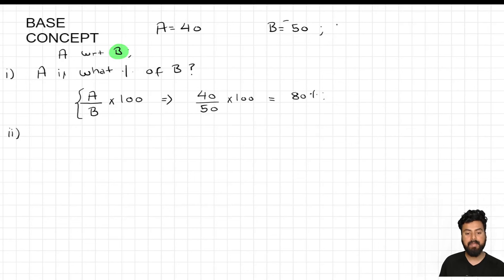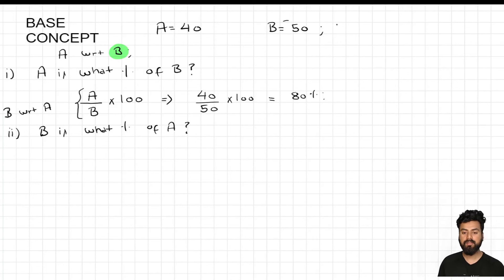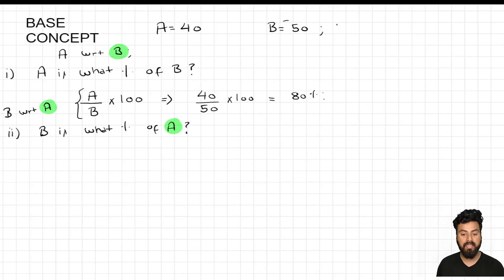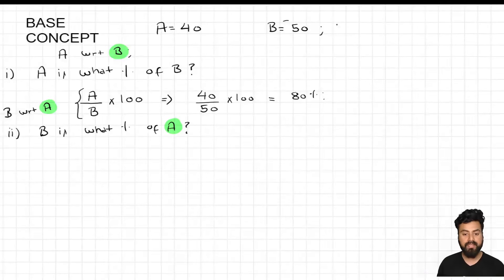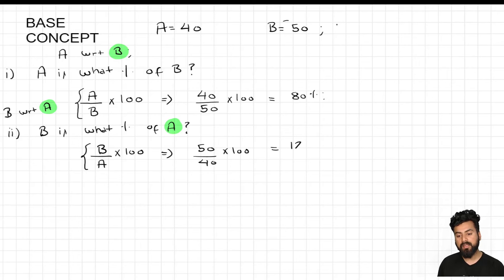The second question: 'B is what percent of A.' Here we are comparing b with respect to a, so a is the reference variable and I write a in the denominator. The fraction is b's value 50 in the numerator over a's value 40 in the denominator. Multiply by 100 and you get the answer as 125%.